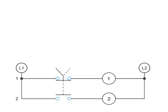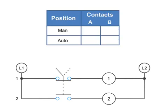Contact position on a selector switch can easily be illustrated using truth tables. This truth table illustrates the manual or automatic contact positions of a two contact selector switch.